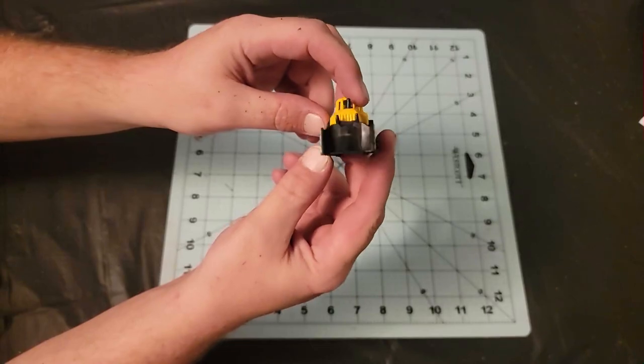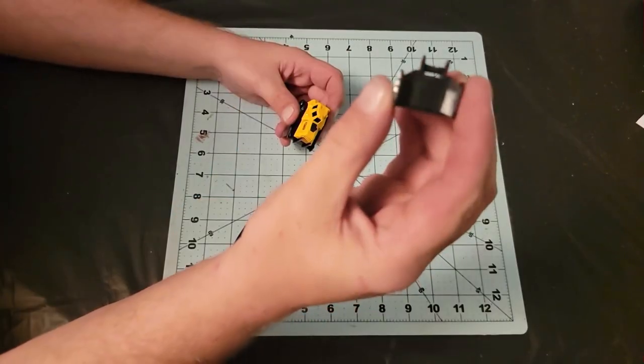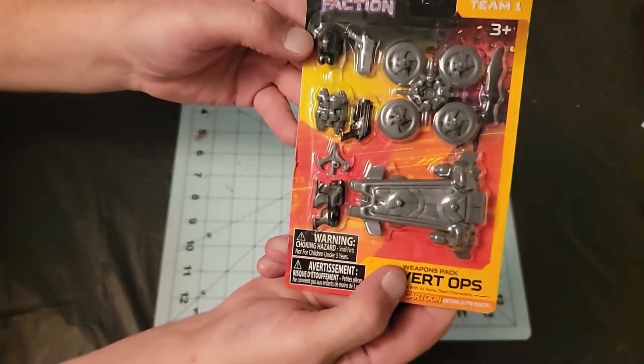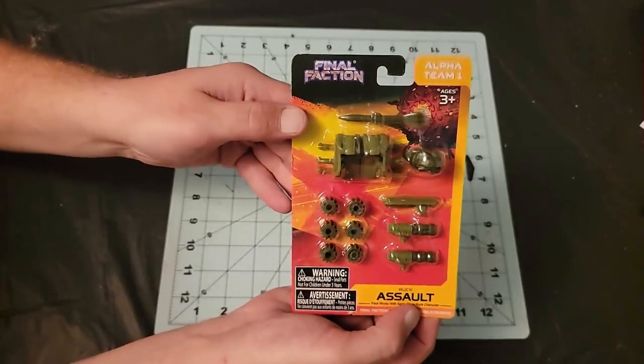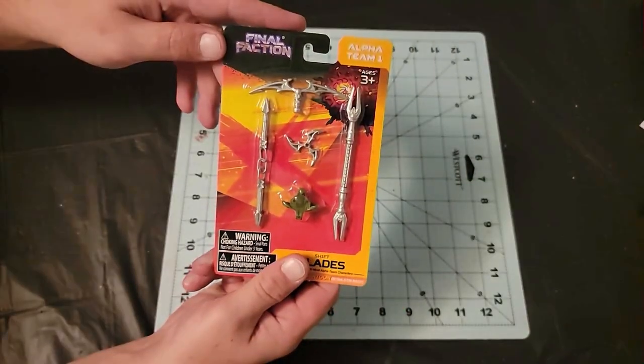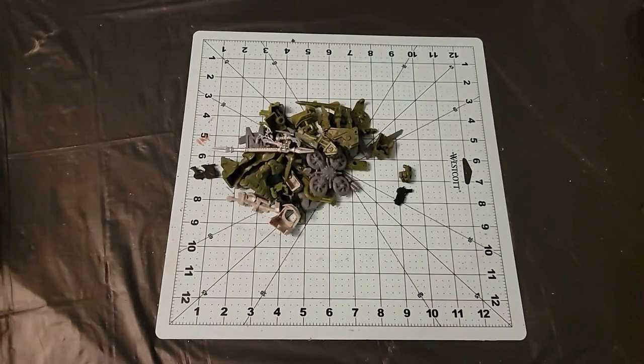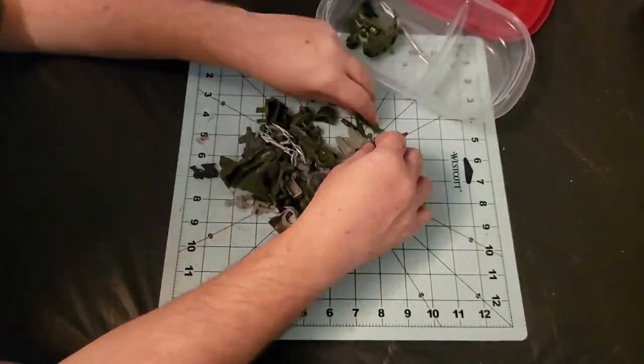I had this toy bulldozer that I wanted to use the front of, so I used some clippers to cut it loose. I also bought a bunch of these toys from Dollar Tree that had armor pieces and small guns that were perfect for this build, so I opened them up and picked through them to find some pieces that I wanted to incorporate onto these cars.